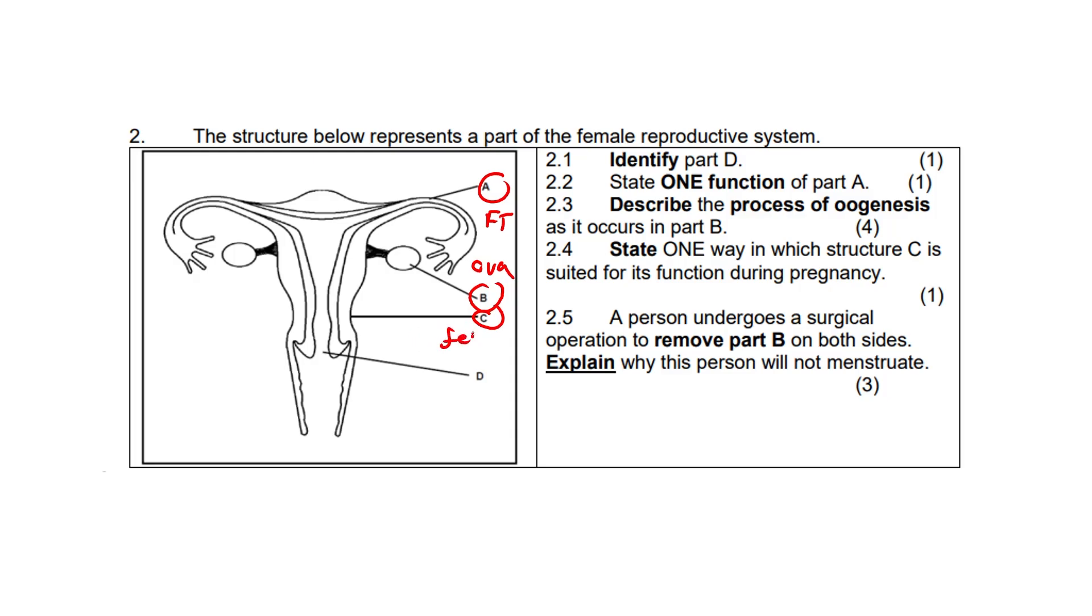C represents the uterus which houses and nourishes a developing fetus. Please, fetus is spelled like this - a lot of my students spell it otherwise. D represents the cervix, the lower part of the uterus that opens up into the vagina.